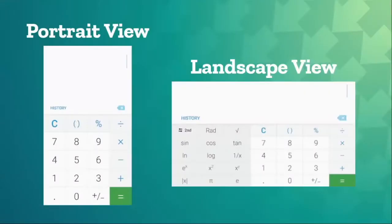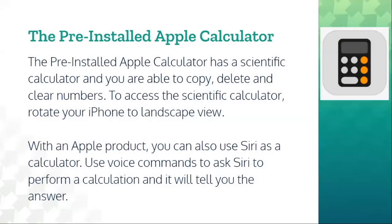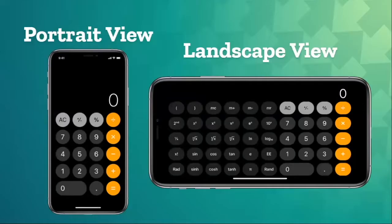To do more complex calculations, simply turn your phone from portrait to landscape view. Now let's talk about the Apple calculator on an iPhone. The pre-installed Apple calculator has a scientific calculator where you are able to copy, delete, and clear numbers. To access the scientific calculator, rotate your iPhone to landscape view. With an Apple product, you can also use Siri as a calculator — use voice commands to ask Siri to perform a calculation and it will tell you the answer. Here is an image of what it would look like on an iPhone.